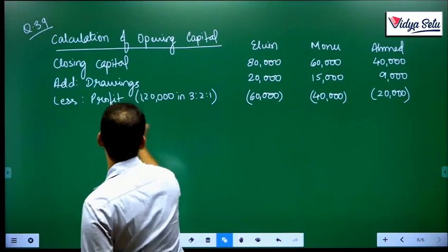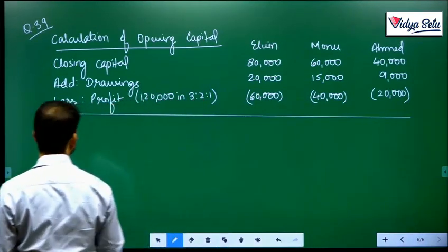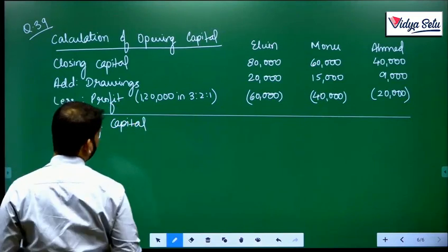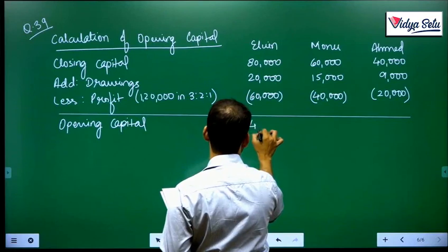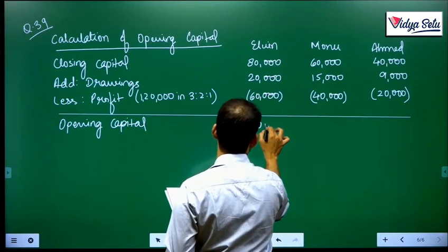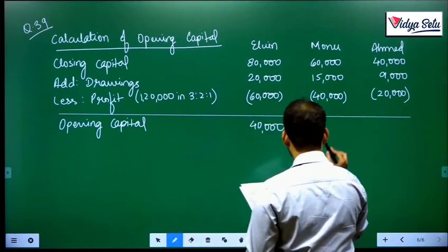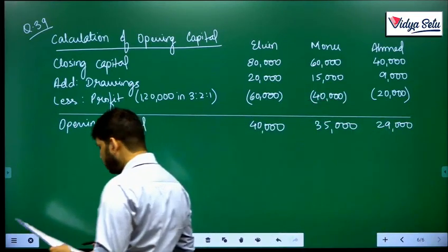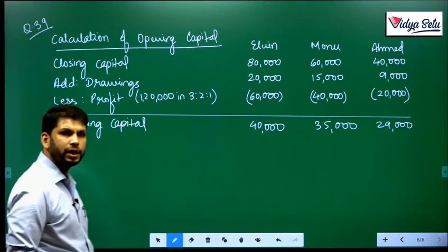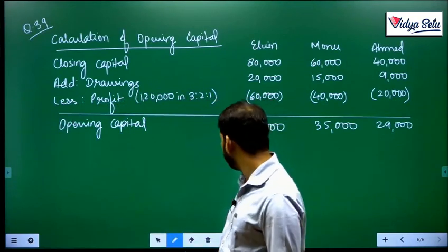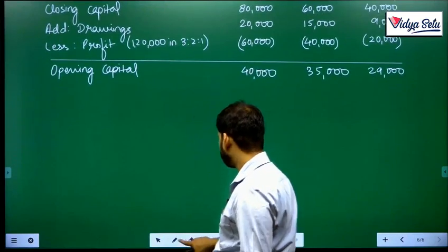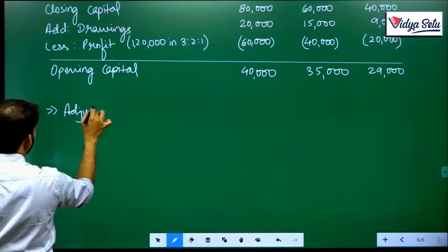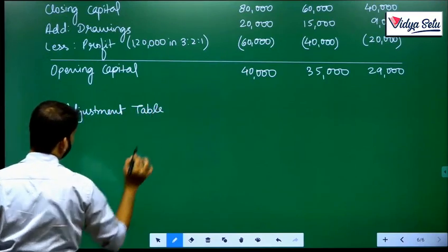Whatever profit we gave, let us reduce 1,20,000, which was the profit in 3:2:1. Opening capital we got 40,000, 35,000, and 29,000.